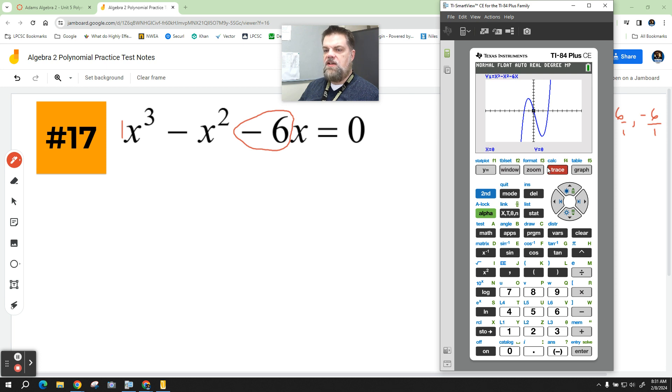We can double check that by hitting trace. Oh, look at that. 0, 0. If I hit negative 2, it crosses there. And then if I hit 3, it crosses there.